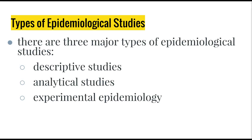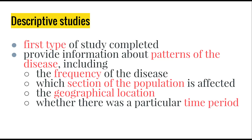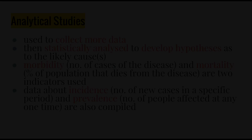There are three types of epidemiological studies: descriptive studies, analytical studies, and experimental epidemiology. Descriptive studies are the first type completed. They provide information about the patterns of disease, including the frequency, which section of the population is affected, the geographical location, and whether it occurred over a particular time period. A modern pop culture example is the movie Erin Brockovich, where people living in a particular area at a particular time were more susceptible to a form of cancer, which was linked to contaminated water.